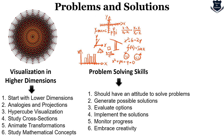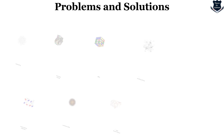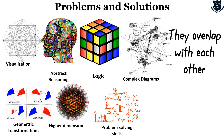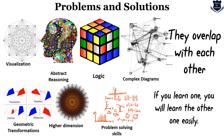These are the problems you might face when dealing seriously with geometry, and these are the possible solutions. Now there is good news. All these things — visualization, abstract reasoning, logic, complex diagrams, geometric transformation, higher dimensions, and problem solving — they actually overlap each other. One concept overlaps with another. So the good news is: if you learn one, you will learn the others more easily. If you learn visualization, automatically abstract reasoning and higher dimensions will come. If you learn logic, you will be able to understand complex diagrams and develop problem-solving skills.